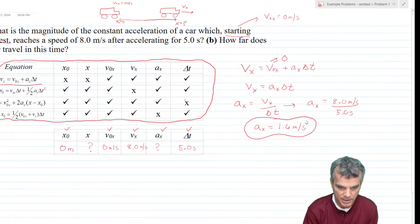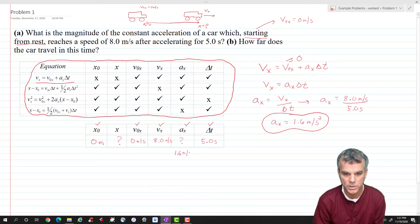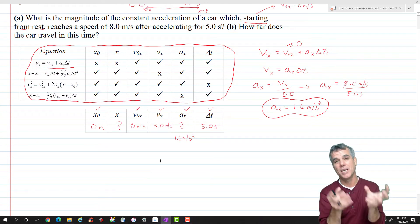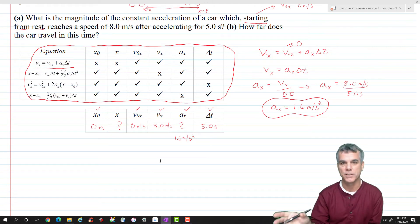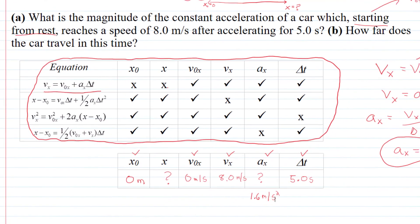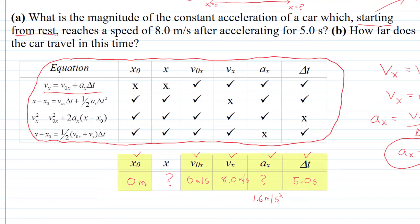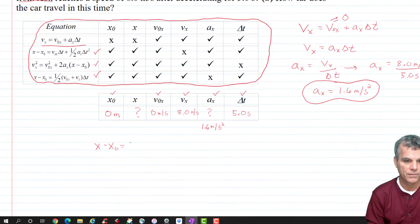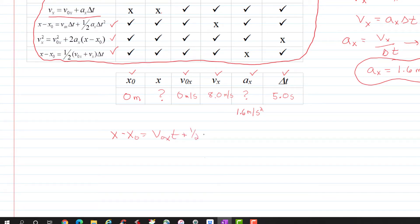Now we have the acceleration: 1.6 meters per second squared. For part b, we want to know how far the car travels. My initial position x0 is zero, so I just need to solve for final position x. I now have all my quantities except x. I can use the second equation: x minus x0 equals v0x times delta t plus one-half ax times delta t squared. Both x0 and v0x are zero, so the equation reduces to x equals one-half ax times delta t squared.